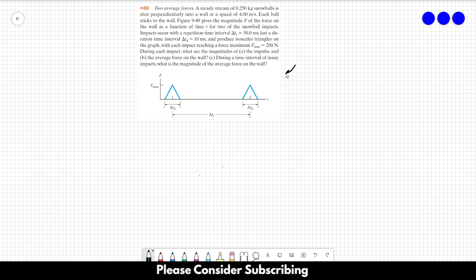This figure gives the magnitude f of the force on the wall as a function of time t for two of the snowball impacts. Impacts occur with a repetition time interval delta tr equals 50 milliseconds, saturation time interval delta td equals 10 milliseconds, and produce isosceles triangles on the graph with each impact reaching a force maximum f max equals 200 newtons.